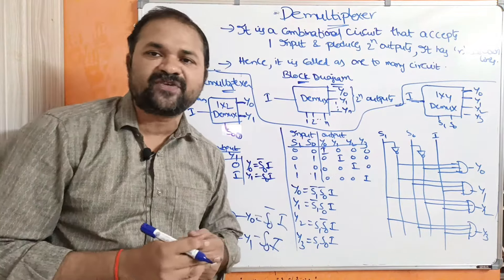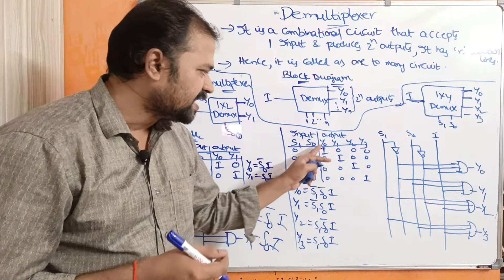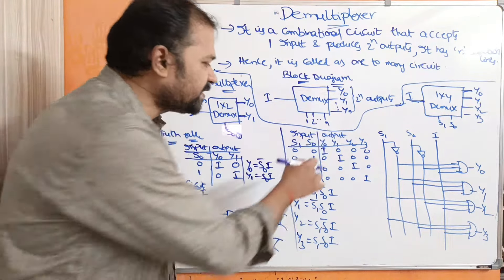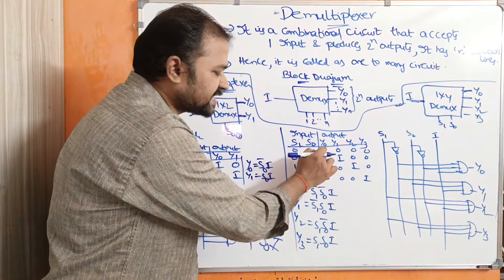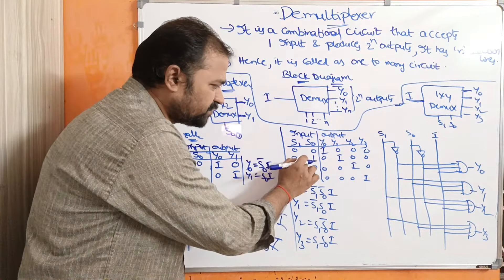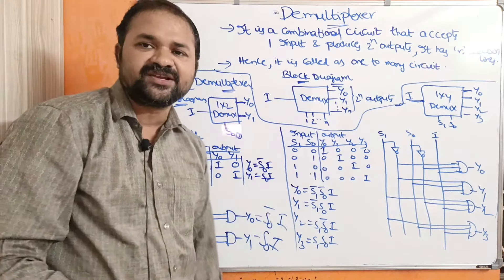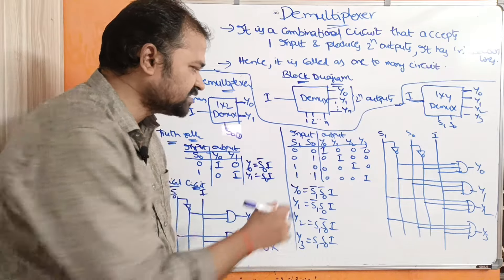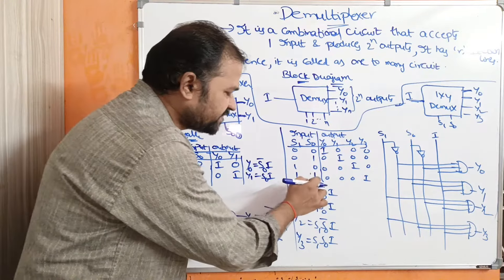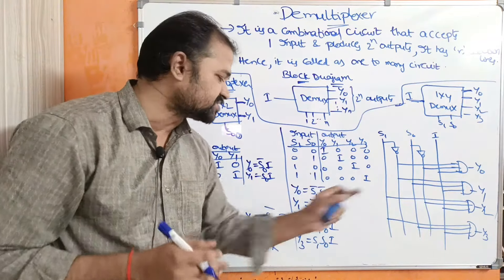Let us see the truth table for the 1×4 demultiplexor. The inputs are s1 and s0; the outputs are y0, y1, y2, y3. If s1, s0 = 0, 0: y0 = i, y1 = y2 = y3 = 0. If s1, s0 = 0, 1: y1 = i, remaining outputs = 0. If s1, s0 = 1, 0: y2 = i, remaining = 0. If s1, s0 = 1, 1: y3 = i, remaining = 0.